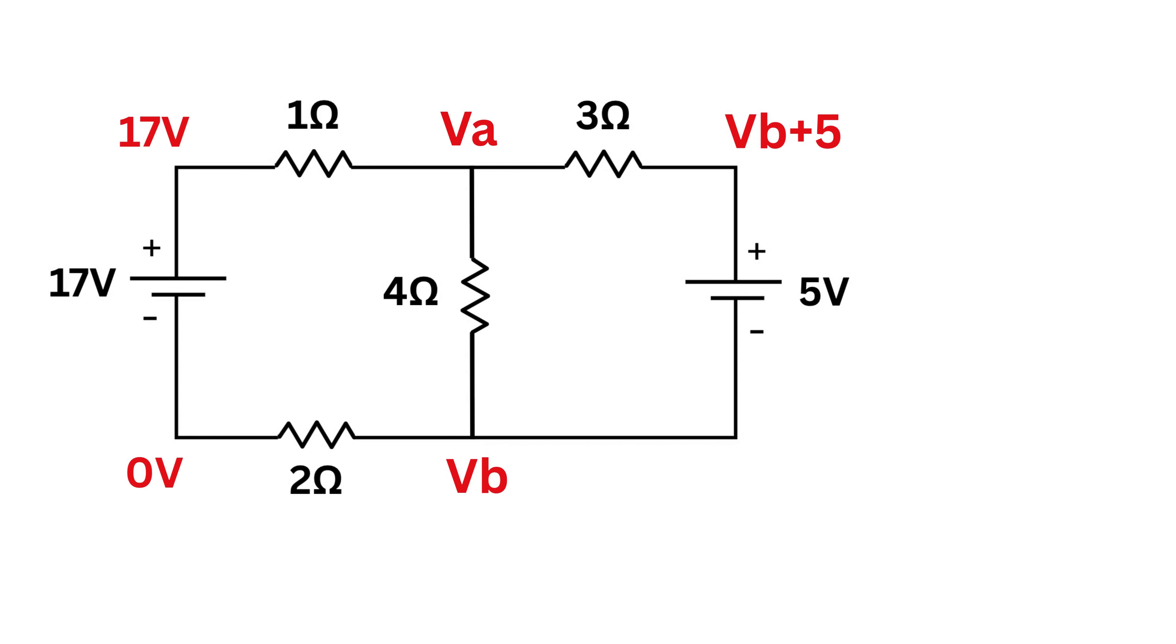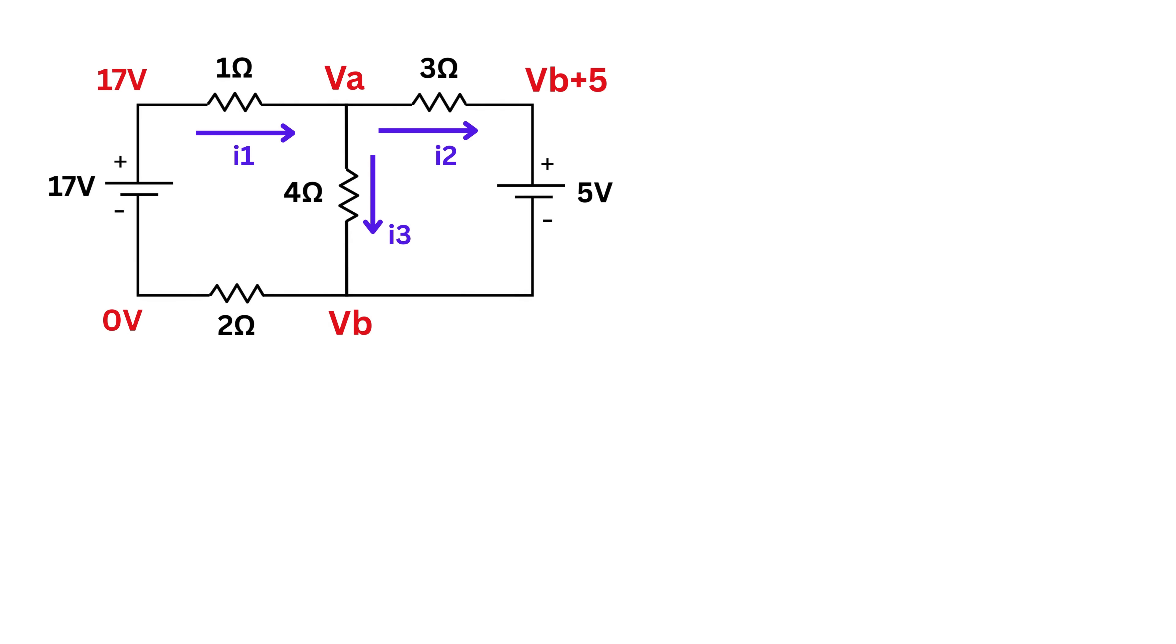Next we apply KCL at each of the nodes that have unknown voltages. For that, assume there is some current that enters node A like this and label it i1. The direction doesn't matter right now because if the value comes out positive, the direction is correct. If it comes out negative, the actual direction will be opposite to this. Then a current going in this direction like this which we call i2, and finally another current i3 going in this branch in this direction. KCL says that the total current entering a junction or a node is equal to the total current leaving it. So at this node A we have i1 equal to i2 plus i3 because i1 is entering the node while both i2 and i3 are leaving it. We can rewrite it as i1 minus i2 minus i3 equals zero.